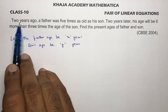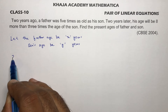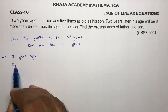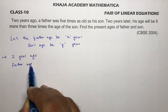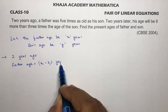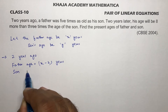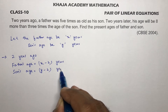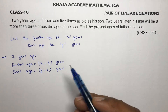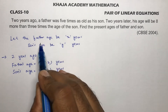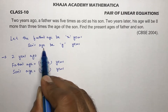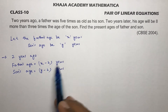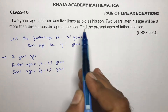The problem involves two years ago and two years later. Two years ago, father's age will be x minus two and son's age will be y minus two. For example, if a boy is ten years old now, two years ago his age will be eight — ten minus two. So father's age two years ago is x minus two and son's age is y minus two.